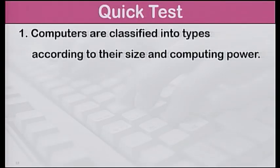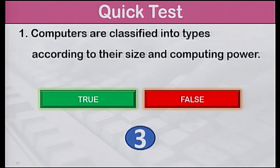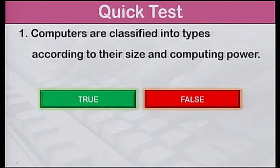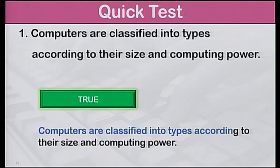Now to evaluate what you have learnt today, let us do a quick test. Number 1: Computers are classified into types according to their size and computing power. True or false? The answer is true. Computers are classified into types according to their size and computing power.